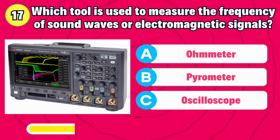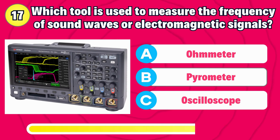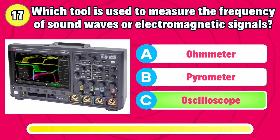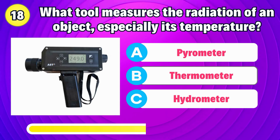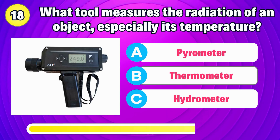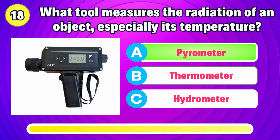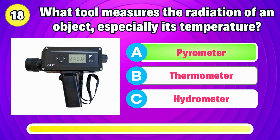Which tool is used to measure the frequency of sound waves or electromagnetic signals? The answer is oscilloscope. What tool measures the radiation of an object, especially its temperature? The answer is pyrometer.